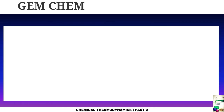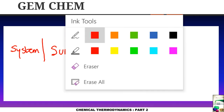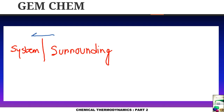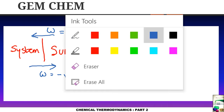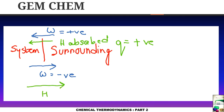In the diagram, when work is done on the system, W is positive. When work is done by the system on the surroundings, W is negative. For heat: if heat is absorbed by the system, Q is positive; if heat is released by the system, Q is negative.